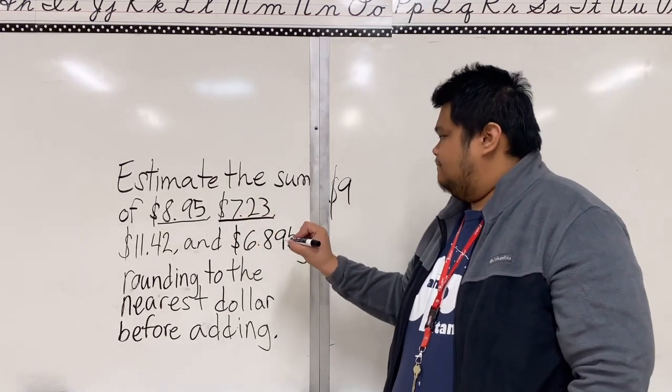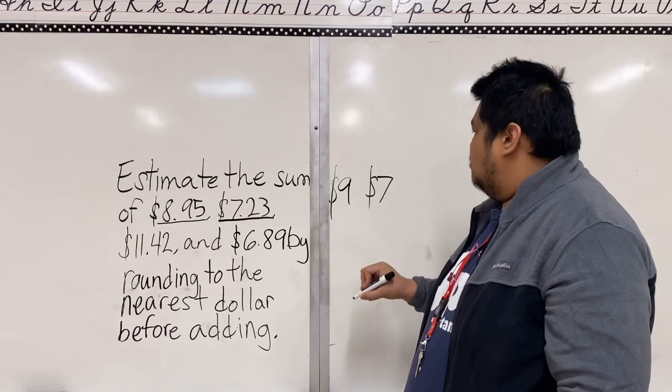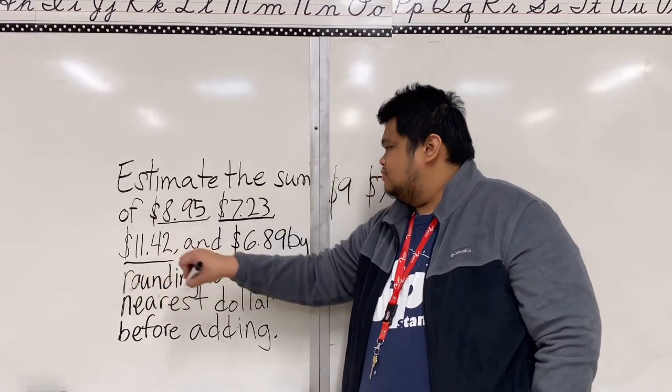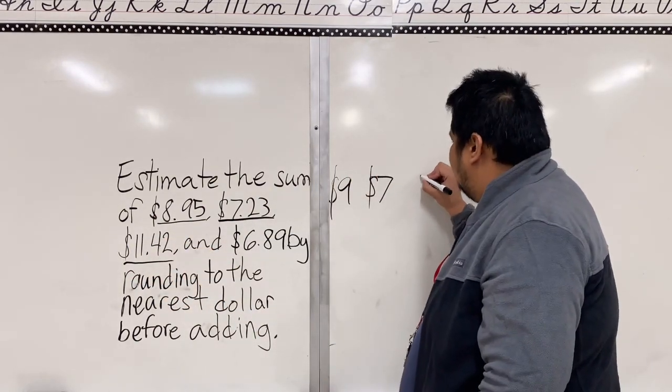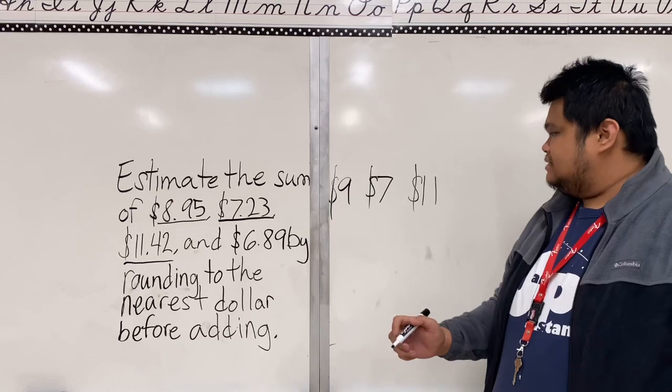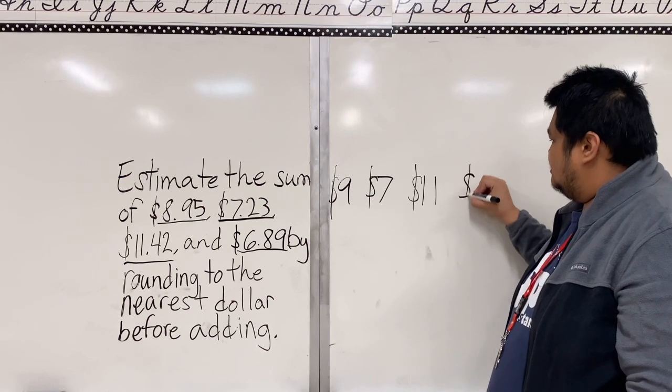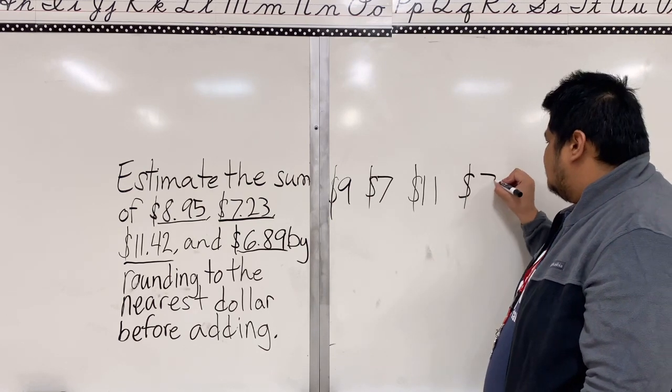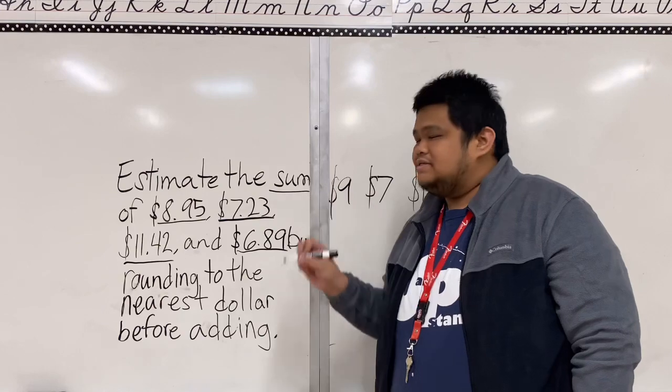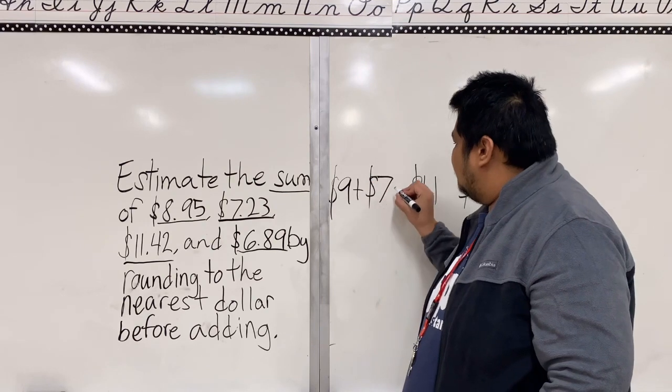Don't forget the dollar sign. Next, 7.23. Yep, it's seven. What about 11.42? Yes, it's 11. All right, and last is 6.89. We're gonna make it 7. Now we are looking for the sum. If the question is sum, we need to add it. So 9 plus 7 plus 11 plus 7.